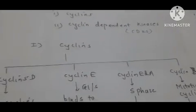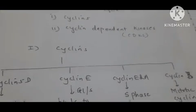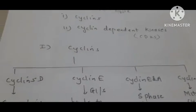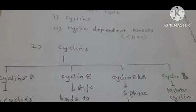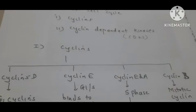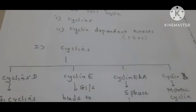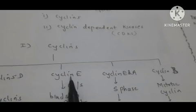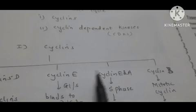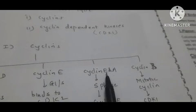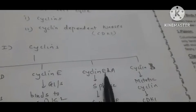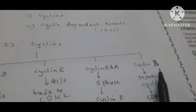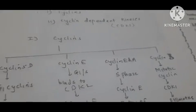We will see all details of these positive regulators. The first positive regulator is cyclins. There are four kinds of cyclins which participate in the cell cycle: Cyclin D, Cyclin E, Cyclin A, and Cyclin B. They participate at various phases during the cell cycle.